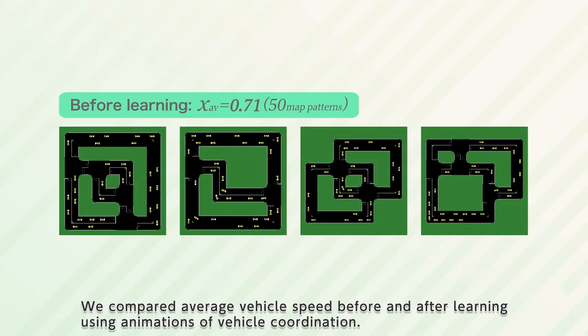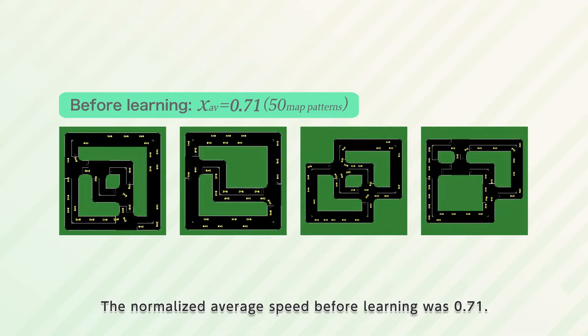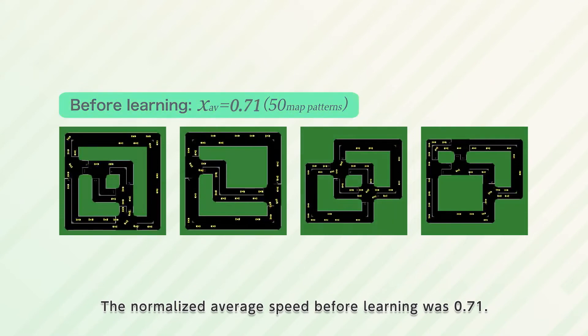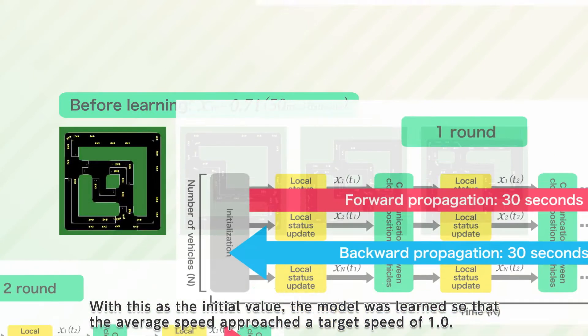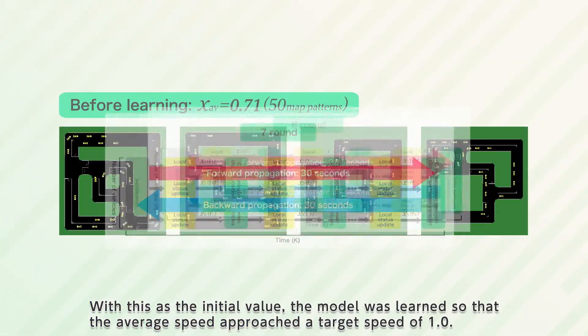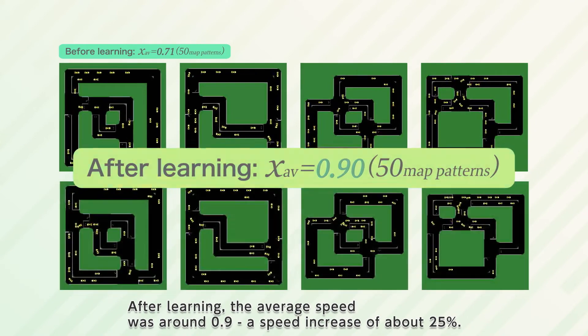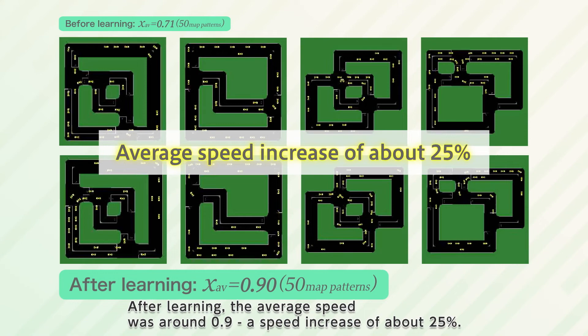We compared average vehicle speed before and after learning using animations of vehicle coordination. The normalized average speed before learning was 0.71. With this as the initial value, the model was learned so that the average speed approached a target speed of 1.0. After learning, the average speed was around 0.9, a speed increase of about 25%.